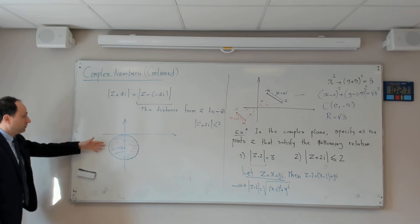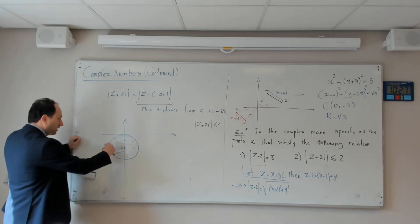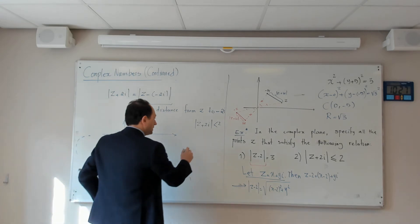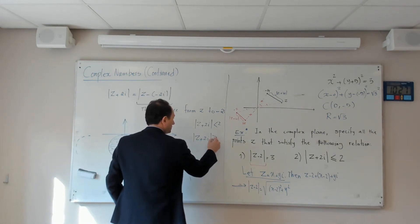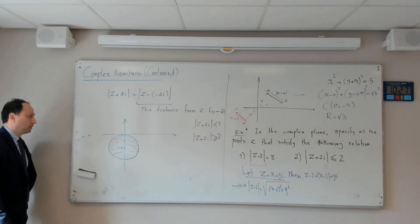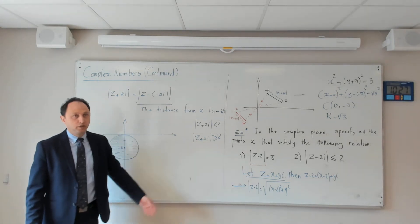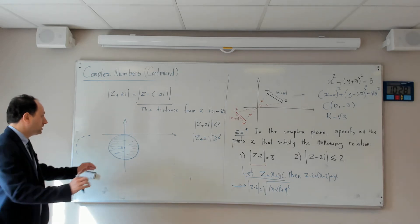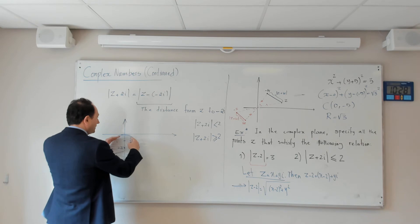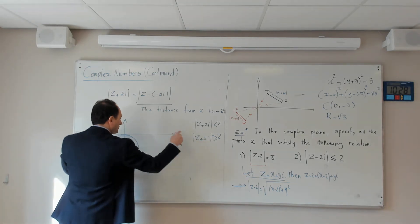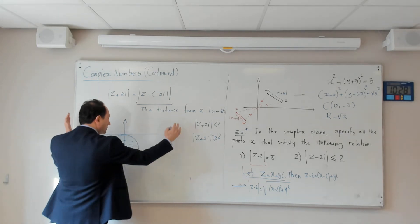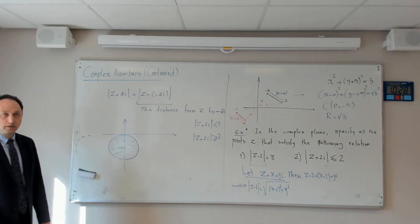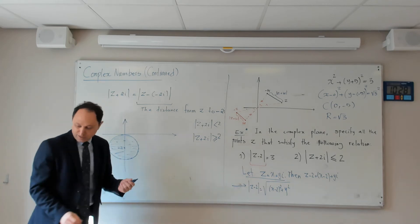To convince whoever is correcting your paper, you need to be precise. If the inequality were strict (less than, not less than or equal), you would draw the circle with a dotted line to show the boundary is excluded. If the problem were |z+2i|≥2, that would be the circle and everything outside. So you need to show clearly which region is included.